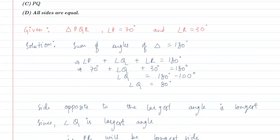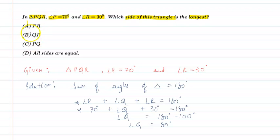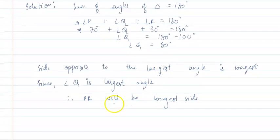Now let us check the options given in the question. As you can see, option A is PR, so option A is the correct answer. I hope you understood this question. Thank you so much.